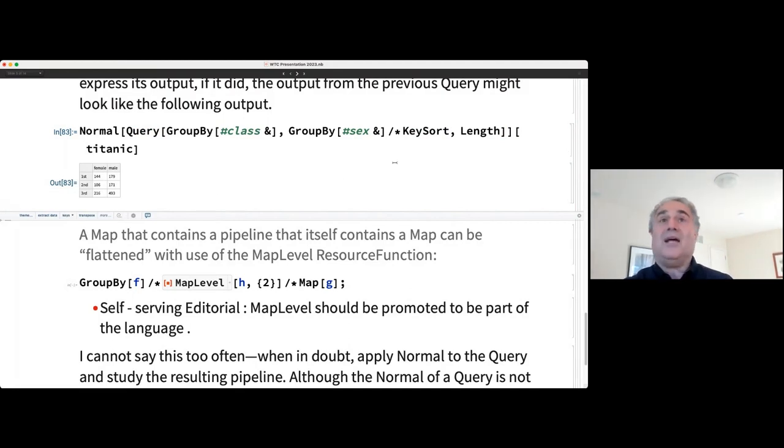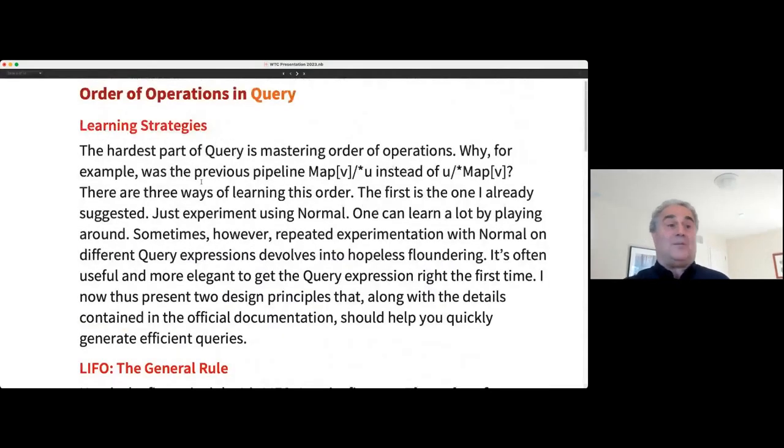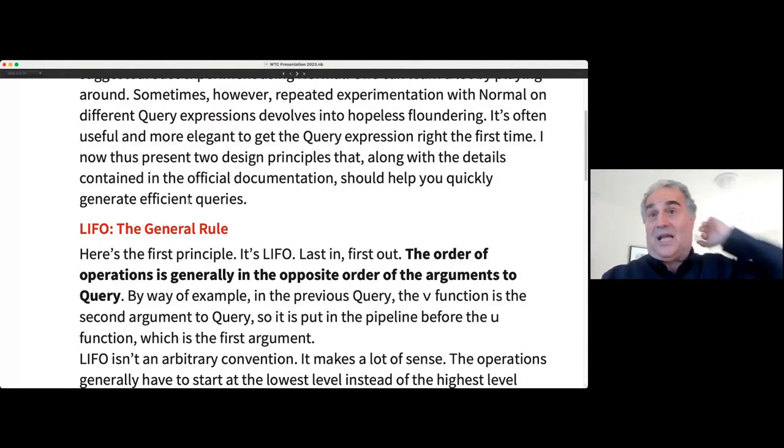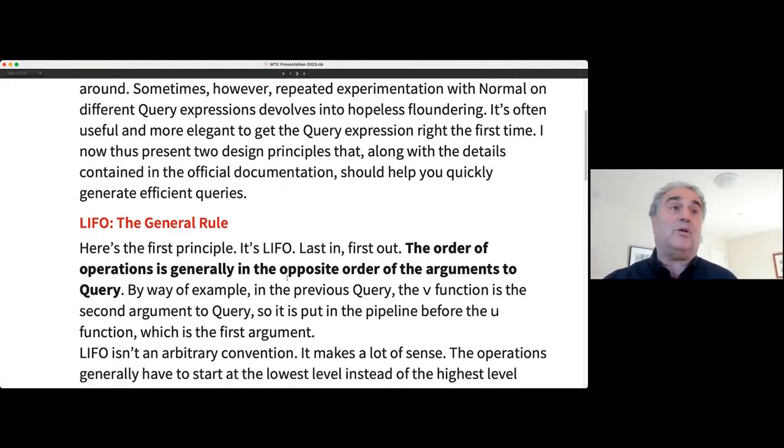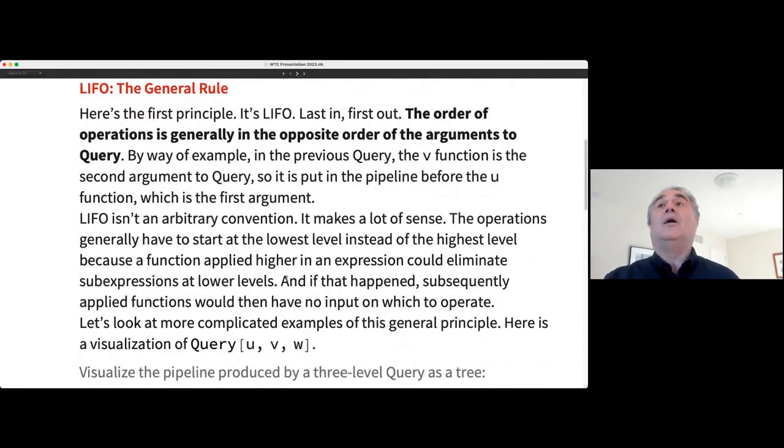And the reason that it's not in a nice table form is that for first class people, the first person that encountered was a female. And then the next person was a male. Whereas in the second class grouping, the first person that encountered was a male and the second person that encountered was a female. So what I'm going to do is I'm going to compose this with a key sort operation so that it's consistent. And now we get a much more attractive layout. Okay. So that's a digression, but I hope that was the answer to the question. All right. So supposing you're sick of using normal, you think it's lazy, who could know that? You want to know the rules. All right. So the general rule is LIFO, last in, first out. The order of operations is generally in the opposite order of the arguments to query.